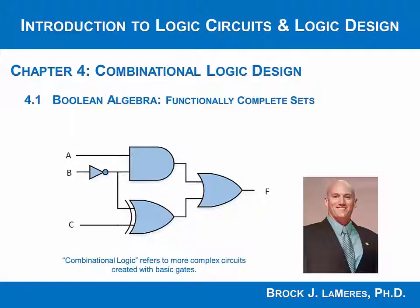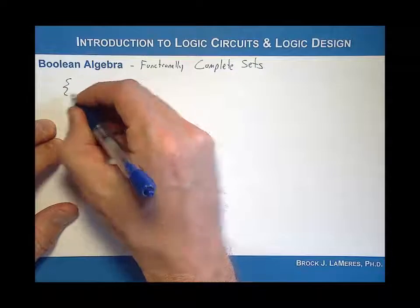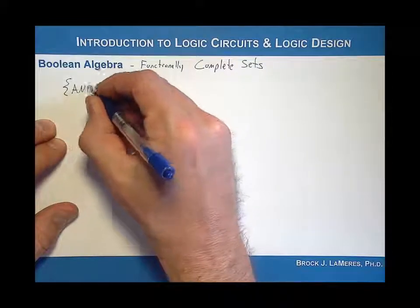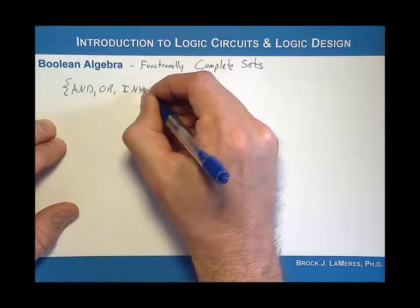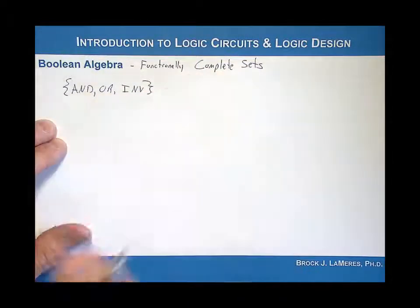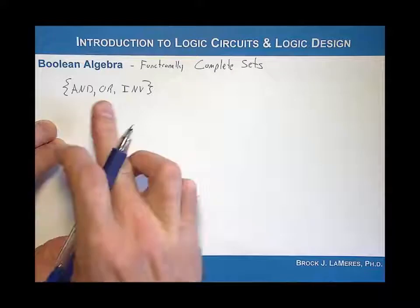A functionally complete set is a set of operations within Boolean algebra that can accomplish all other logical operations that are possible. For example, if I said the set of operations AND or an inverter is functionally complete, that would be true because any other operation that I want — any other basic gate — can be implemented with this.